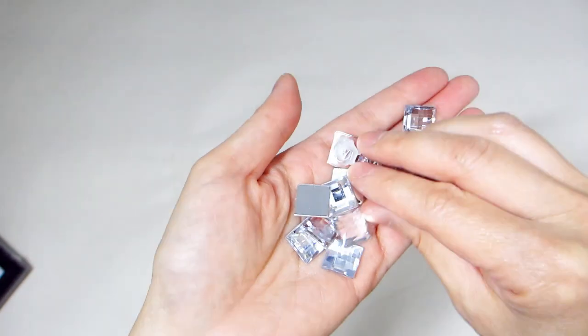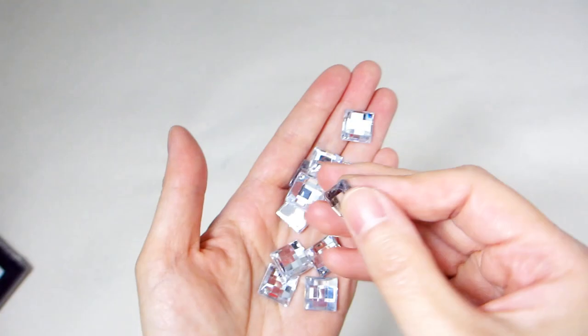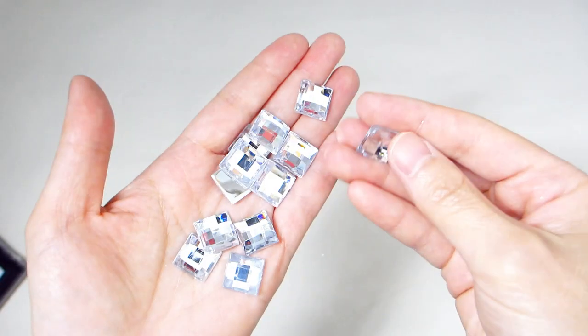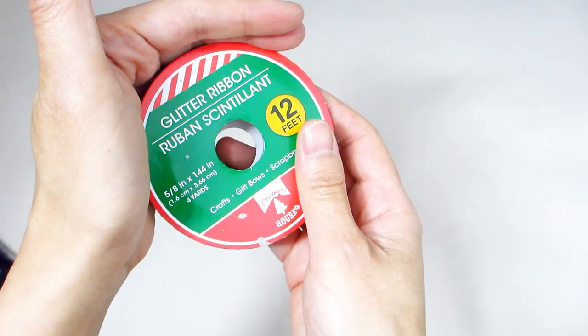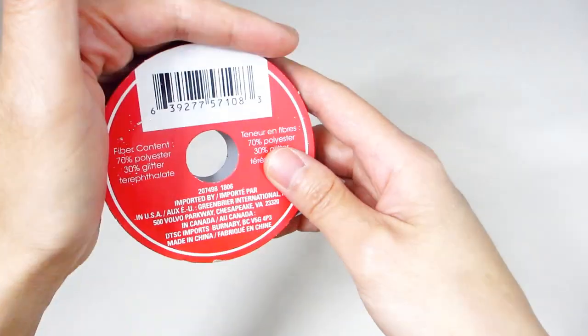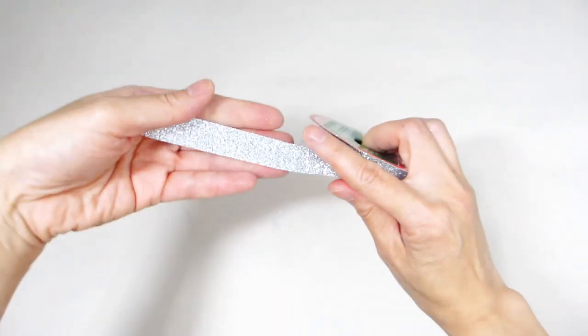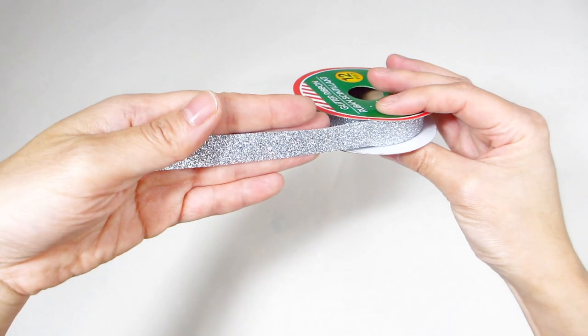For embellishments, I have chosen these clear, loose, flat-back square gems I bought in bulk from Alibaba. I'll also be using this silver glitter ribbon I found in the holiday section of the dollar store last Christmas. Also from last year's holiday season is this large, beautiful silver gift bag.